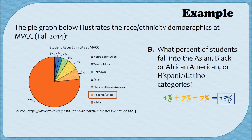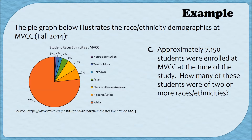Let's do one more example. Approximately 7,150 students were enrolled at MVCC at the time of the study. How many of these students were of two or more races or ethnicities? We're interested in students who are of two or more races or ethnicities, which is the indigo portion of the graph at just 2% of the population. However, this question asks how many students — not a percentage — so we need to use the percentage and the total number of students to figure out how many students were of two or more races or ethnicities.